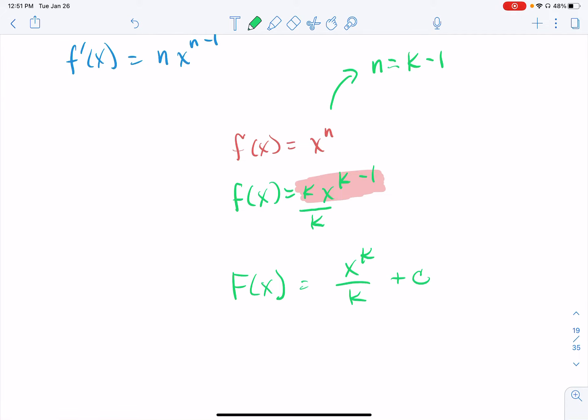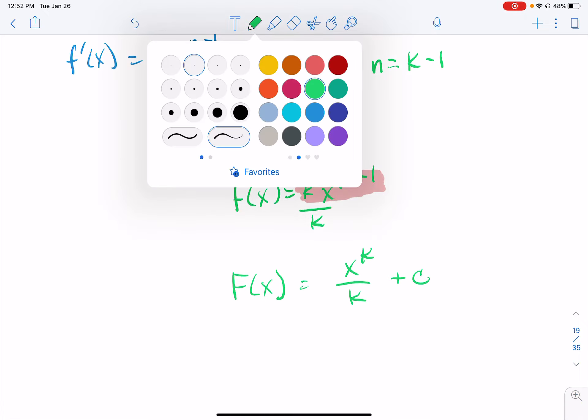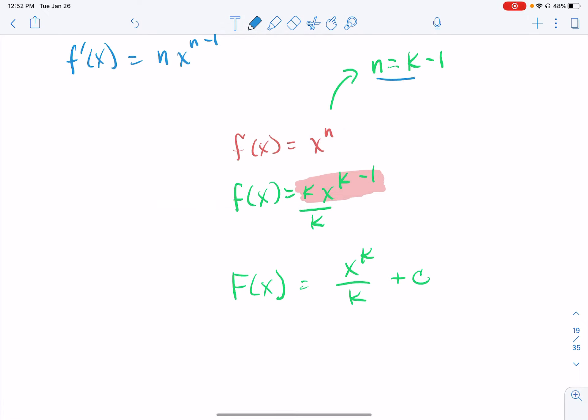All right. The only thing left to do is to get rid of the k and translate those things back to the original n. We can do that very simply by just solving this equation here for k, adding the 1 over. And I can see that n plus 1 is equal to k.